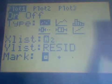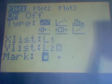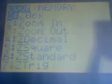the menu to type that all in. So second y equals, turn plot one on, make it a scatter plot, and we're going to use list one and list two. I'm pressing second one to get that and second two to get that to appear.